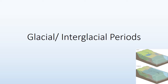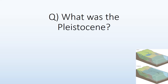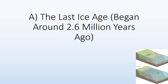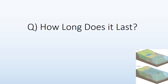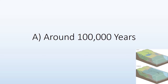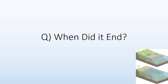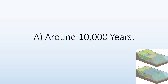Glacial and interglacial periods. The last ice age began around 2.6 million years ago. It lasted around 100,000 years and ended around 10,000 years ago.